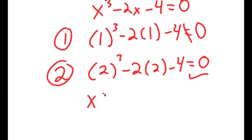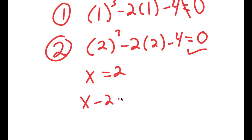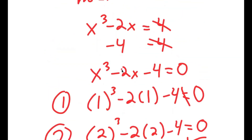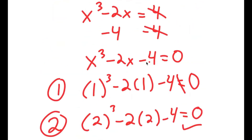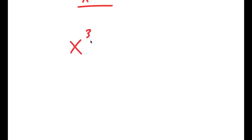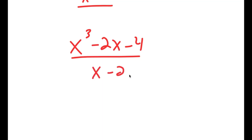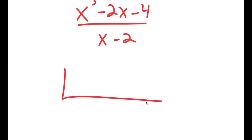More precisely, x equals 2 is a solution, meaning x minus 2 equals 0. So we're going to divide x minus 2 into x to the power of 3 minus 2x minus 4. We're going to use synthetic division. Our coefficients of the numerator are 1, 0, negative 2, and negative 4 — we include a 0 because there's no x² term — and we have 2 on the side.